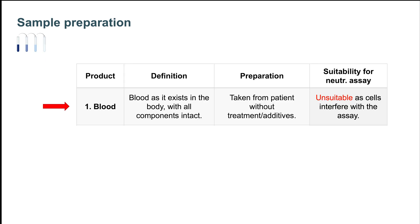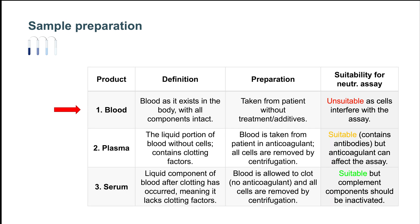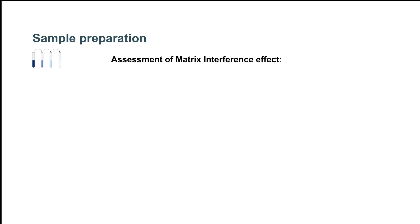For example, blood samples are unsuitable for a neutralization assay due to the presence of blood cells, coagulation factors, and the complement. Therefore, it is better to work with serum samples, which do not contain cells and coagulation factors, and to heat inactivate them to eliminate the complement components that may lyse the virus or the assay cells. For less-known or characterized matrices, it will be important to perform some matrix interference studies to assess the effect of matrix interference on the assay.